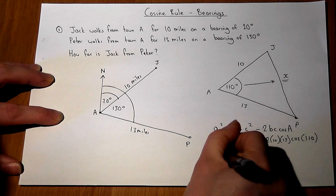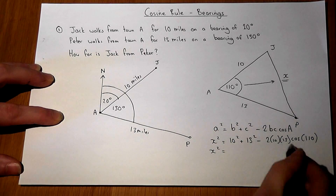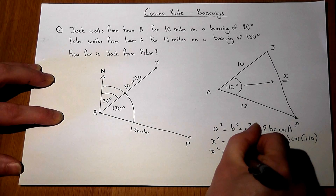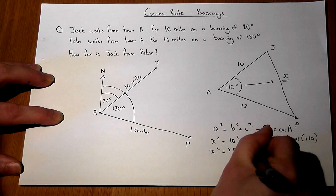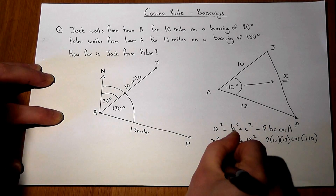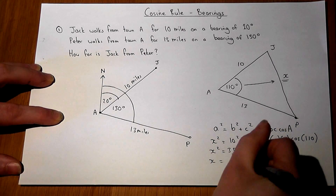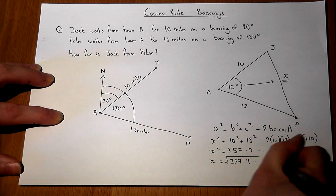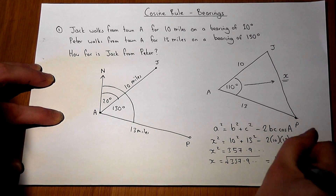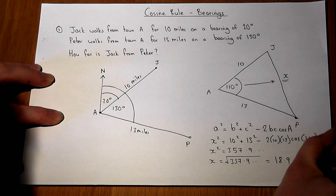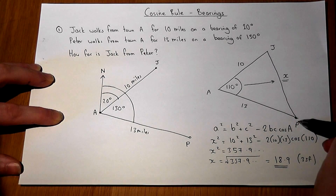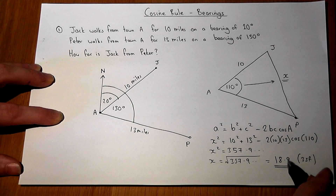X squared equals 357.9 when worked out on the calculator. So X is the square root of that answer, which gives us 18.9 to 3 significant figures. So Jack and Peter are 18.9 miles apart.